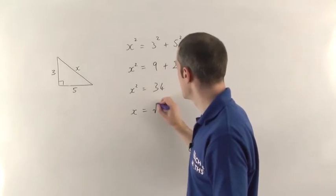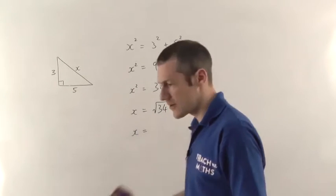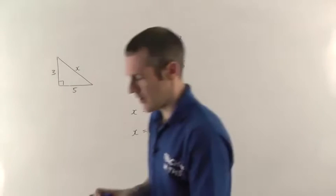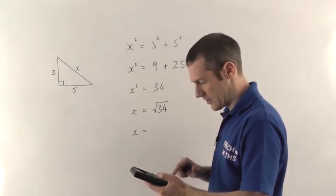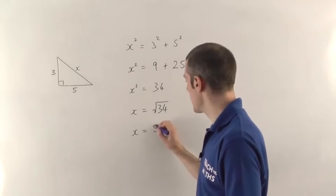In this case, it's the square root of 34 which we'll need our calculator for and we find out that it is 5.8 to one decimal place.